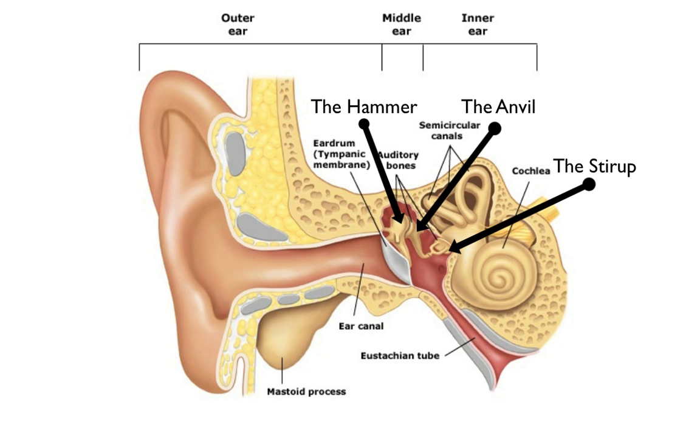The cochlea contains a small amount of fluid, which moves tiny hair cells which convert those sound waves into electrical impulses.